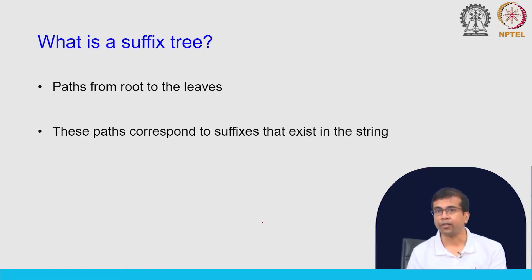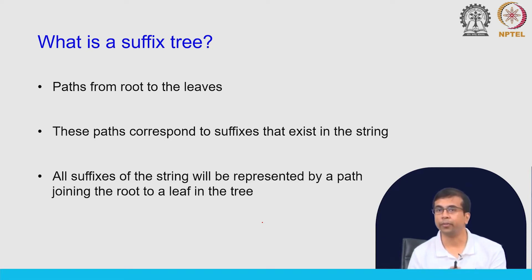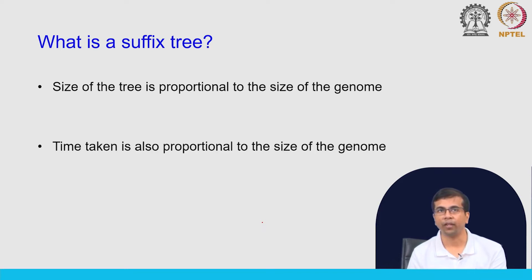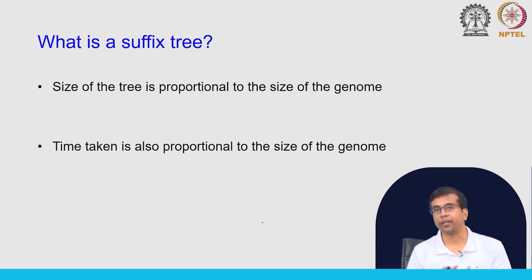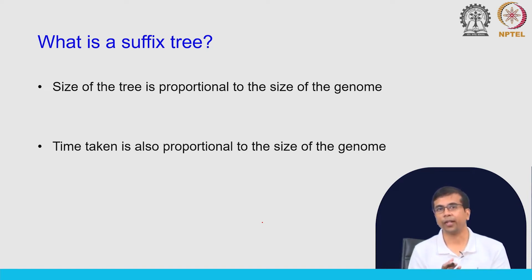We take the genome reference sequence and build the suffix tree out of that. The size of the tree is proportional to the size of the genome — if you have a bigger genome, the suffix tree will be larger. The time taken to build the tree is also proportional to the size of the genome, because for bigger genomes you will have more suffixes and it will take more time to build the suffix tree.